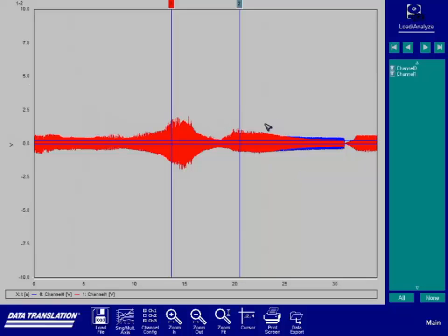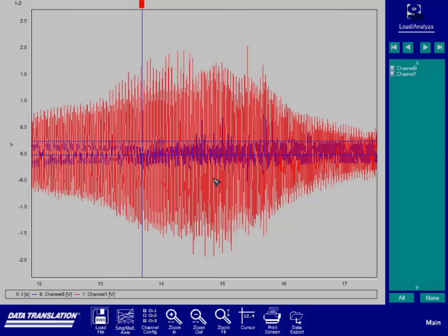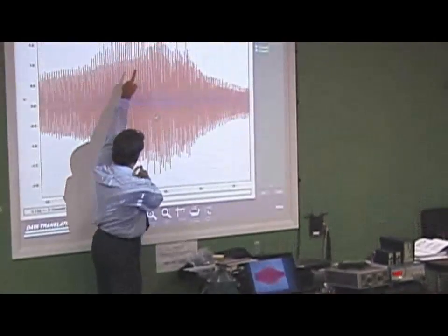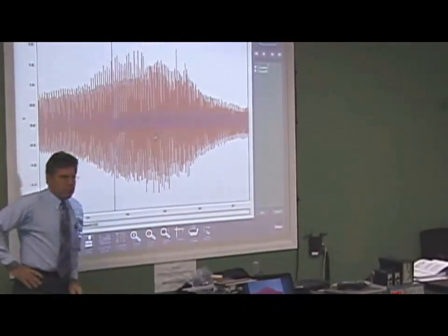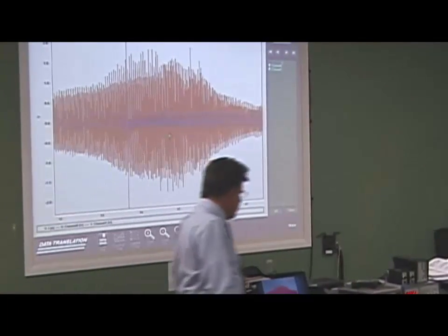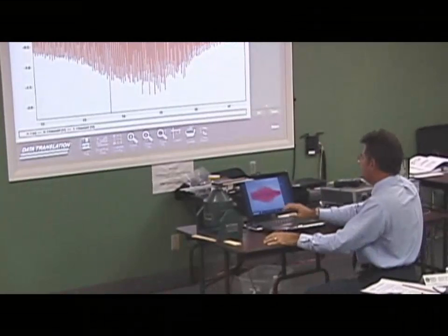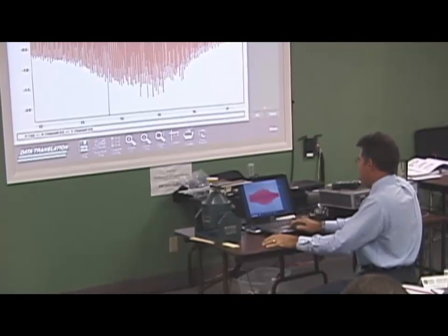So this is a sine sweep. There it is. Blue is the input and red is the response. I could zoom in on it if I wanted, but there's really not a lot of need. What I'm looking for is the ratio of this to that. So that's the transmissibility. So this would be the transmissibility or amplification at resonance for the undamped.